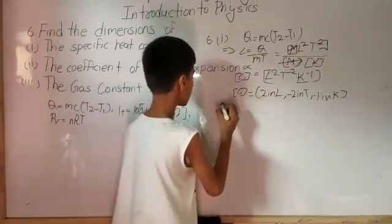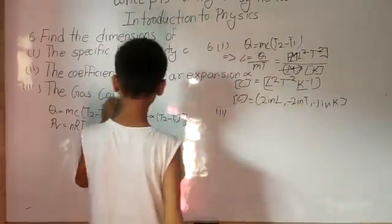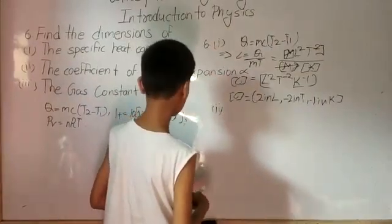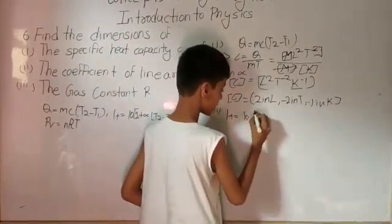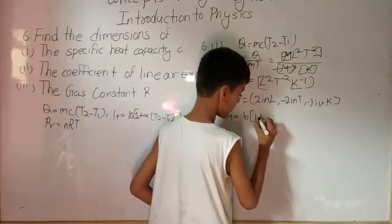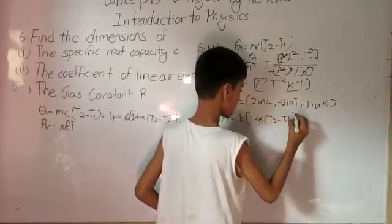Next is question number second for it. That is the coefficient of linear expansion alpha. Here equation we can write LT equals to L naught bracket 1 plus alpha(T2 minus T1). This we have.